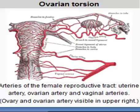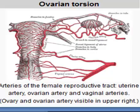Ovarian torsion refers to the rotation of the ovary at its pedicle to such a degree as to occlude the ovarian vessels. Ovarian torsion accounts for about 3% of gynecologic emergencies. The incidence of ovarian torsion among women of all ages is 5.9 per 100,000 women, and the incidence among women of reproductive age is 9.9 per 100,000 women.